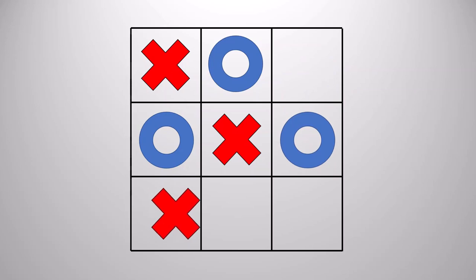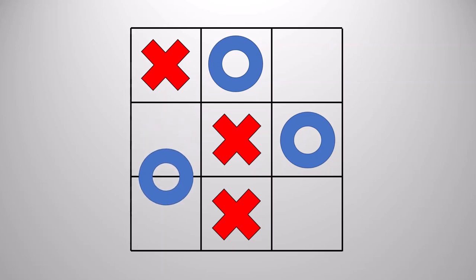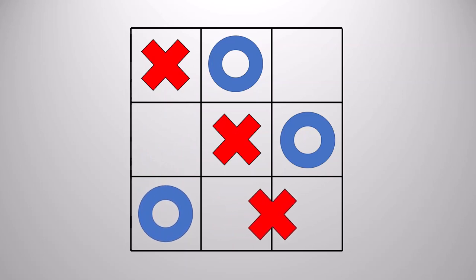Maybe X follows it up by taking the bottom left X and moving it to the right. And maybe, just maybe, O will commit a massive blunder by moving here, allowing X to move one more to the right on the bottom, and therefore win the game by having three in a row.